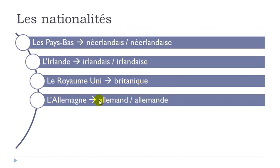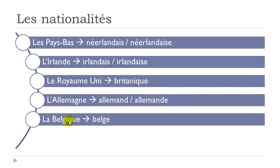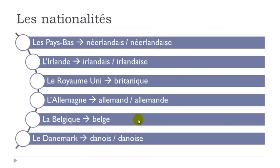L'Allemagne — allemand, allemande. You don't pronounce the final D in the masculine form, but you do pronounce it in the feminine form: allemand, allemande. La Belgique — belge. Only one form here for masculine and feminine. Le Danemark — danois, danoise. Don't pronounce the final S in danois; in danoise, you do pronounce it.